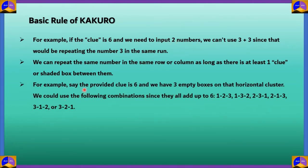For example, say the provided clue is 6, and we have 3 empty boxes on a horizontal cluster. We would use the following combinations, since all of them add up to 6: 1 2 3, 1 3 2, 3 3 1, 2 1 3, 3 1 2, or 3 2 1. If you know the basic numbers, you can arrange them in whatever ways you want. There is no problem in arranging, as long as they are not repeating in the same horizontal or vertical blocks.